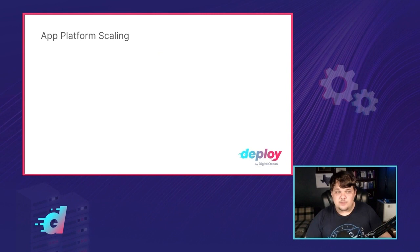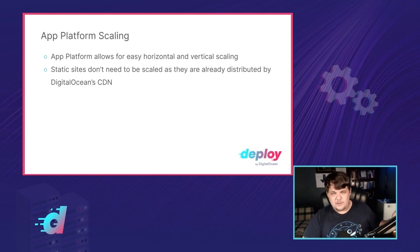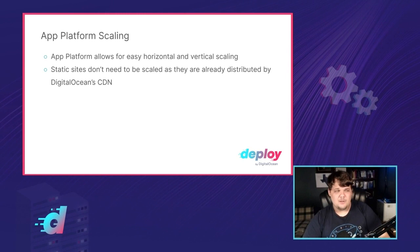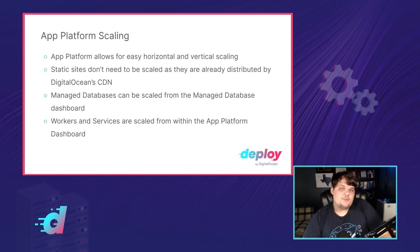Now that we've talked about scaling, how can we scale using DigitalOcean's products, specifically App Platform? App Platform allows for easy horizontal and vertical scaling. Static sites don't need to be scaled on App Platform as they are already distributed through DigitalOcean's content delivery network. Managed databases are scalable from the DigitalOcean dashboard, where you can configure replicas and other settings.